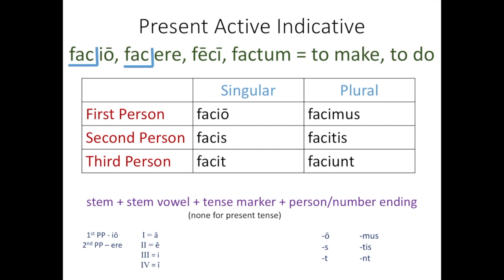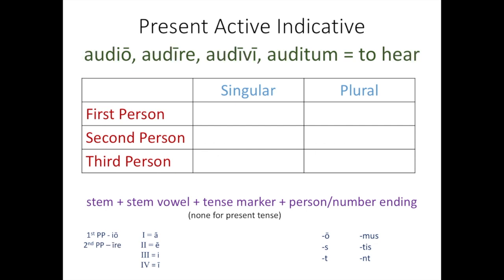So once you've copied this down, resume the video for the fourth conjugation verb. And that fourth conjugation verb that you'll be practicing with is audio, audire, audivi, auditum, to hear.